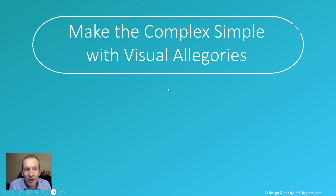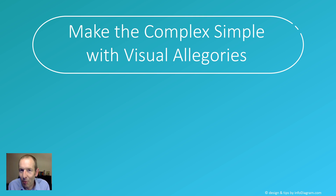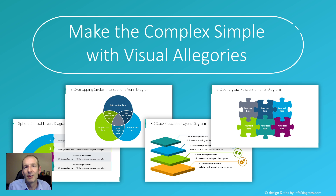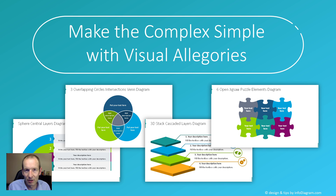As a takeaway: try to make complex things simpler by using simple visual representations. Some examples of visual aids you can use are Venn diagrams, layers, and puzzles — all of these are very good metaphors which can be used to explain simple concepts and, ultimately, more complex ideas.